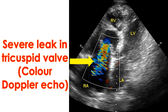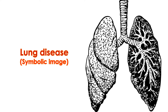Tricuspid regurgitation occurs most commonly due to an increase in right ventricle pressure, which in turn is due to increased pressure in the pulmonary artery that carries blood to the lungs from the right ventricle. Very often, increased blood pressure in the lungs is secondary to either failure of the left ventricle or obstruction of a left-sided heart valve like mitral stenosis. Lung disease is another important cause of increased pulmonary artery pressure.